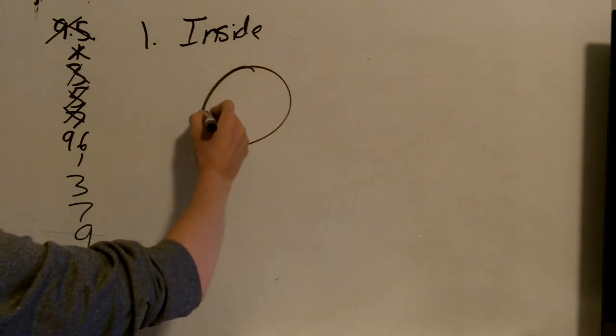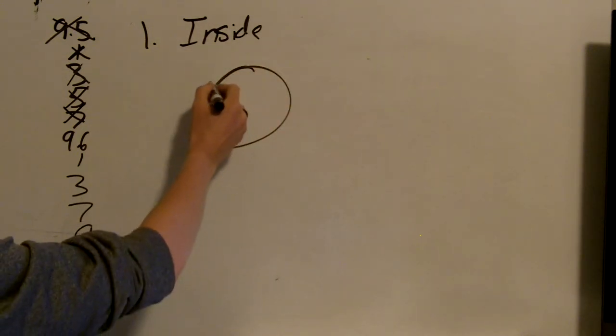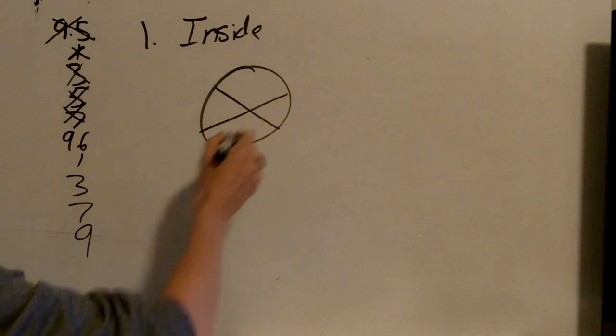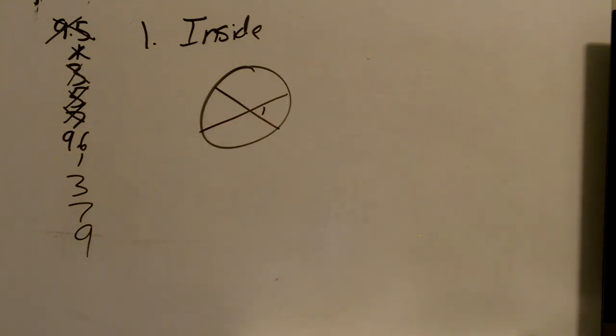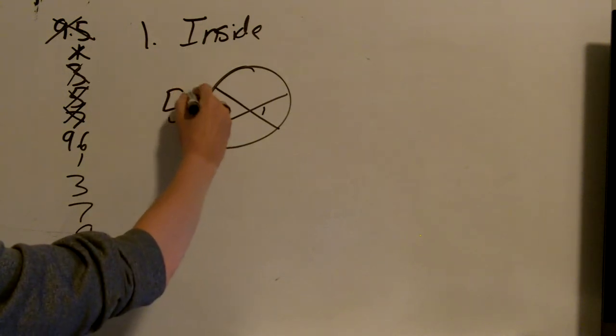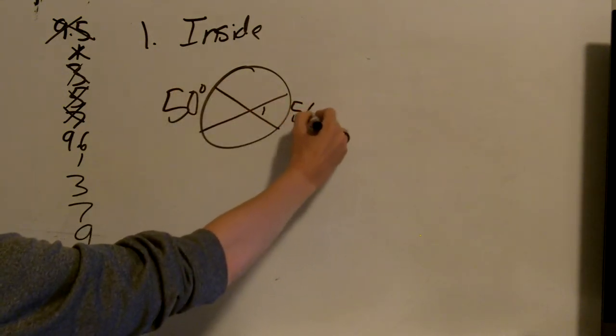So in the circle, we have something that looks like this. I want to know what angle 1 equals, with that being 50 degrees and this being 56 degrees.